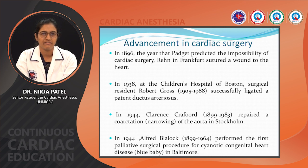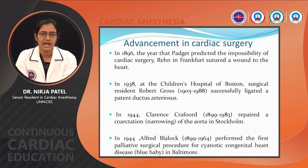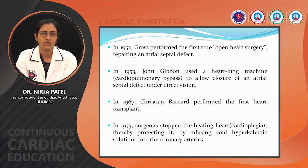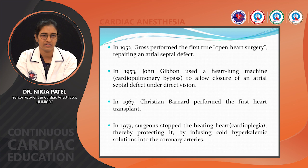In 1896, Paget predicted the impossibility of cardiac surgery, yet a surgeon in Frankfurt sutured a wound on the heart. In 1938, resident Robert Gross at Children's Hospital Boston performed the first patent ductus arteriosus ligation. In 1944, Clarence Crawford repaired a coarctation of the aorta, and Alfred Blalock performed the first palliative surgical procedure for cyanotic congenital heart disease in Baltimore. In 1952, Gross performed the first true open heart surgery, repairing an atrial septal defect. In 1953, John Gibbon used a heart-lung machine — cardiopulmonary bypass — to allow closure of the atrial septal defect under direct vision. In 1967, Christian Barnard performed the first heart transplant. In 1973, surgeons stopped the beating heart using cardioplegia, protecting the heart with cold hyperkalemic solution infused into the coronary arteries.